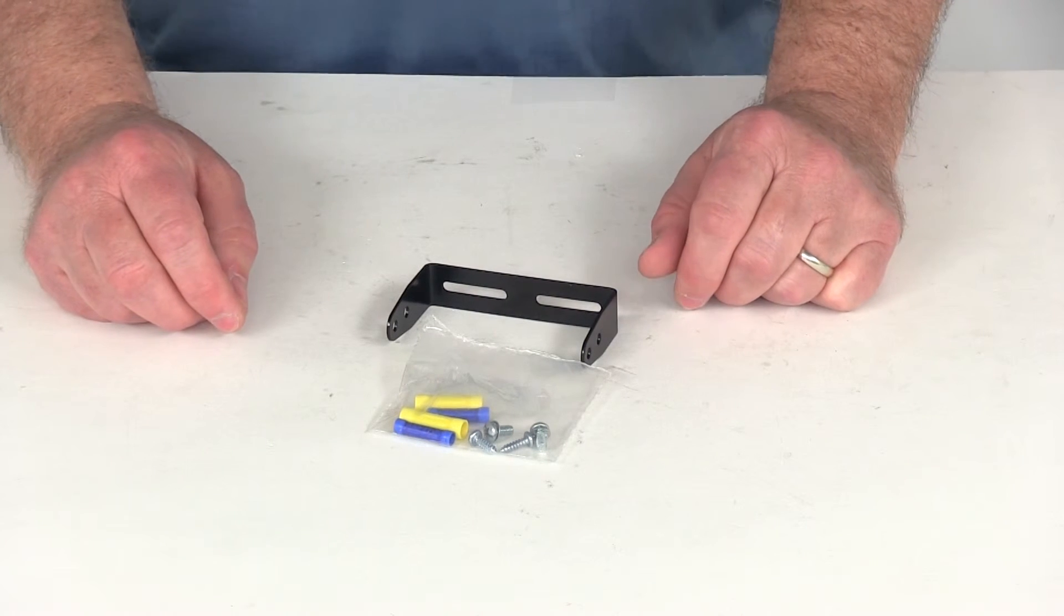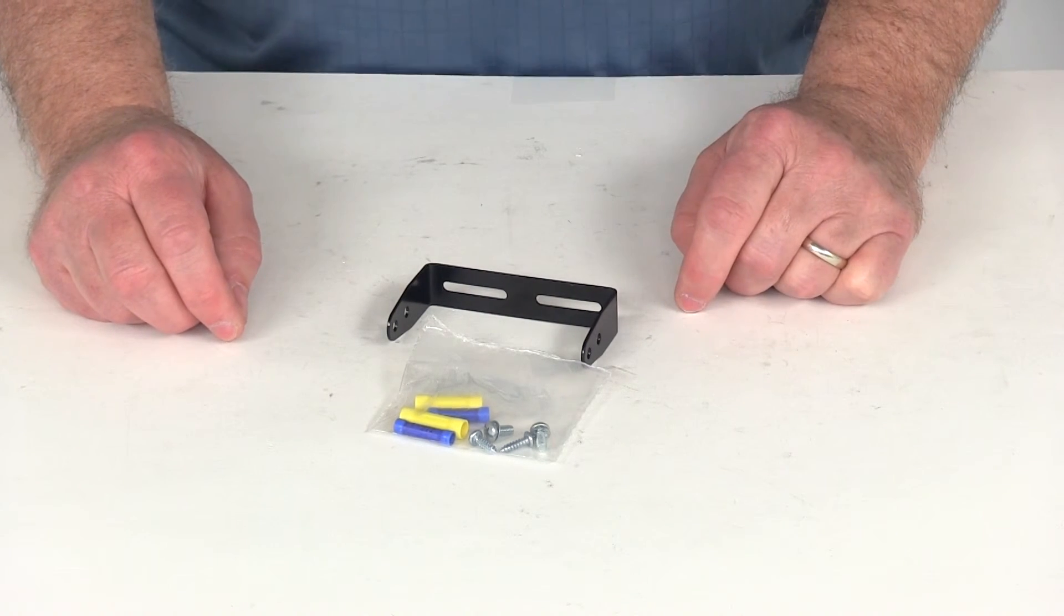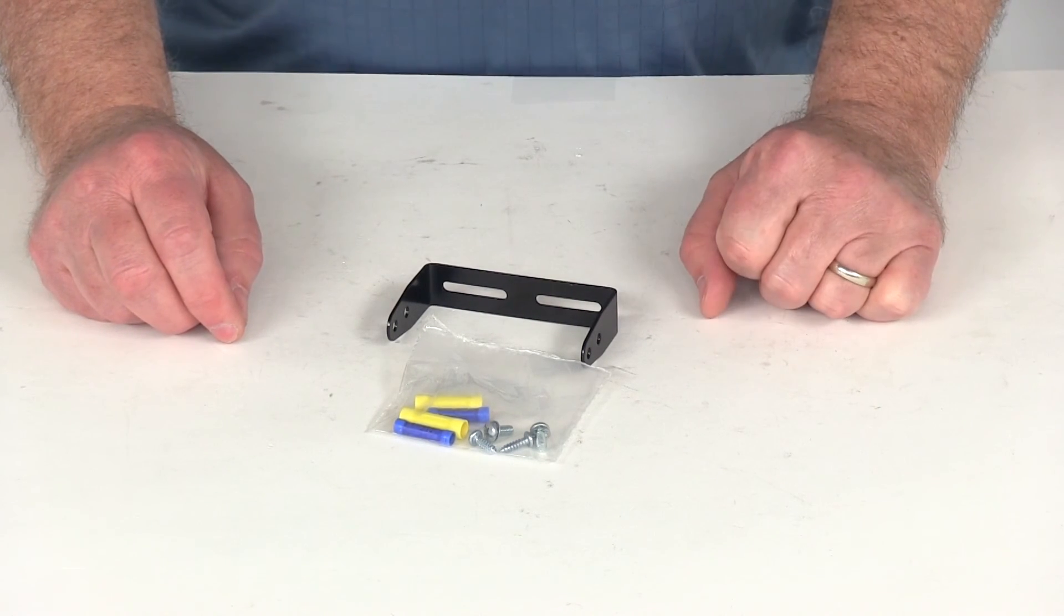But that should do it for the review on part number P7685, the Tekonsha replacement mounting bracket for the Tekonsha Prodigy brake controllers.